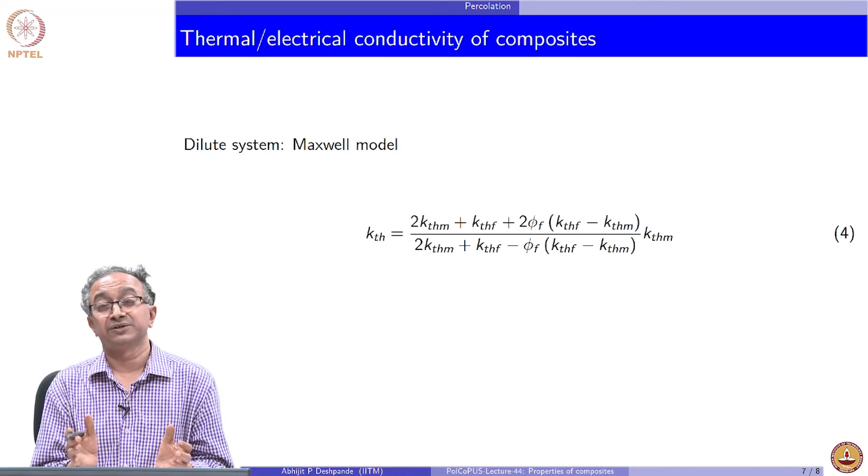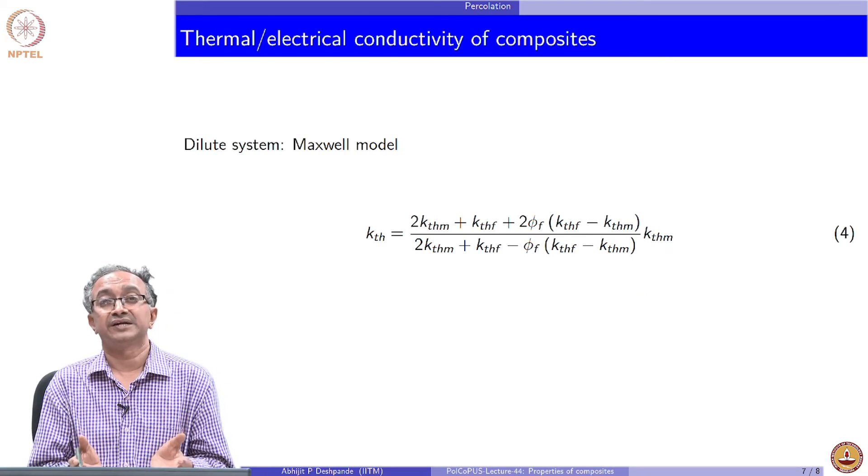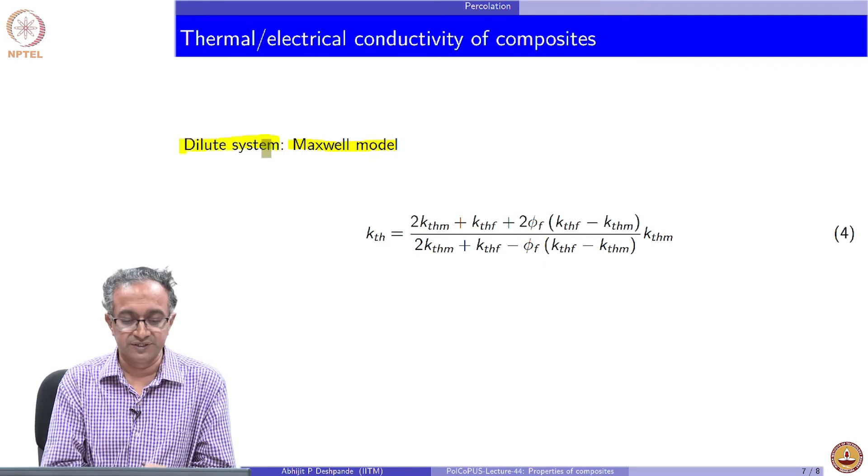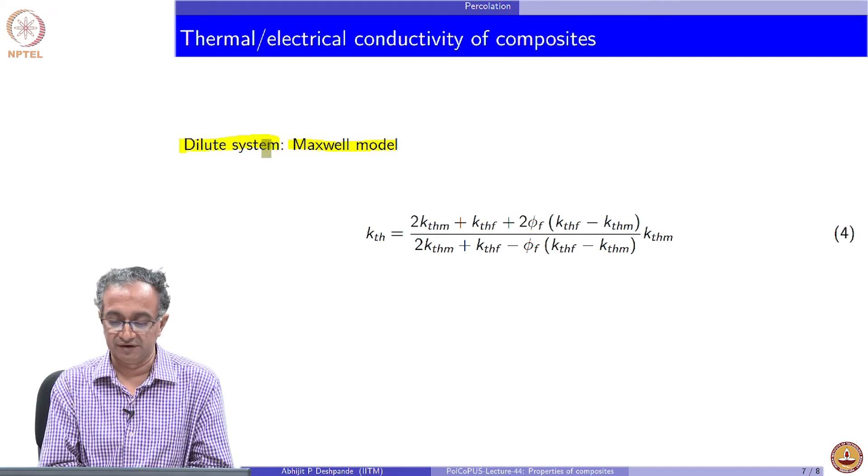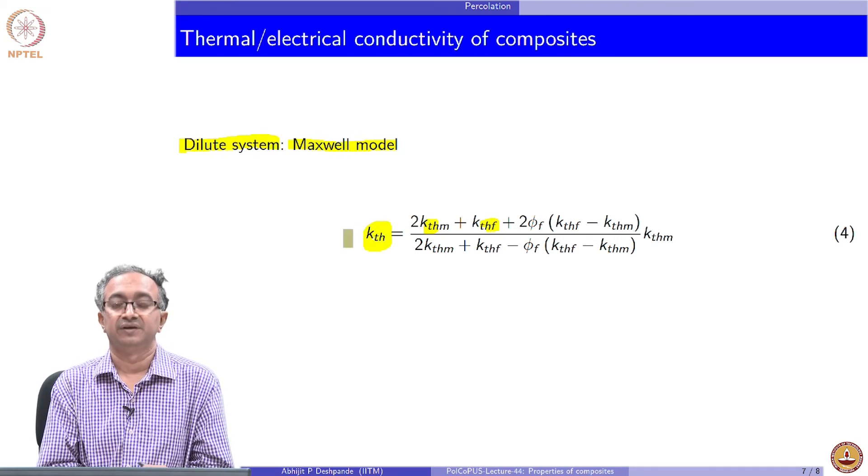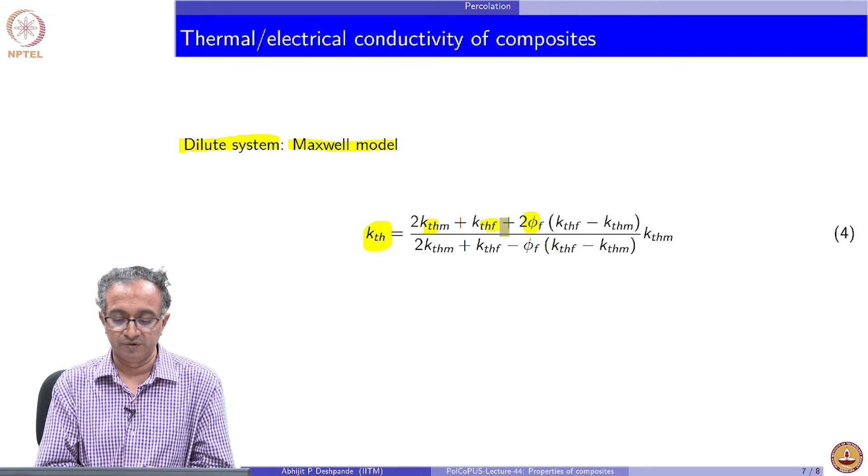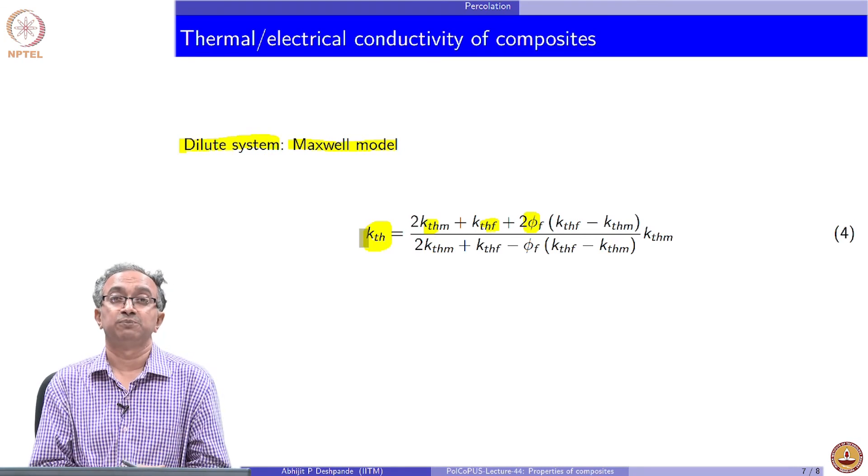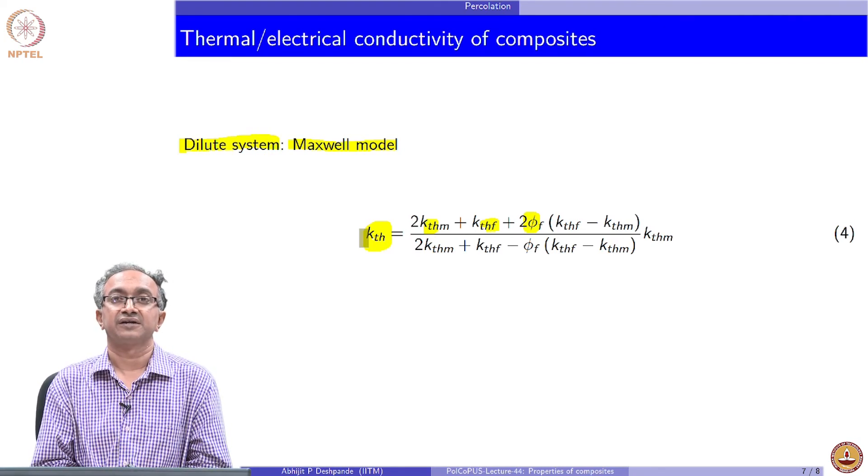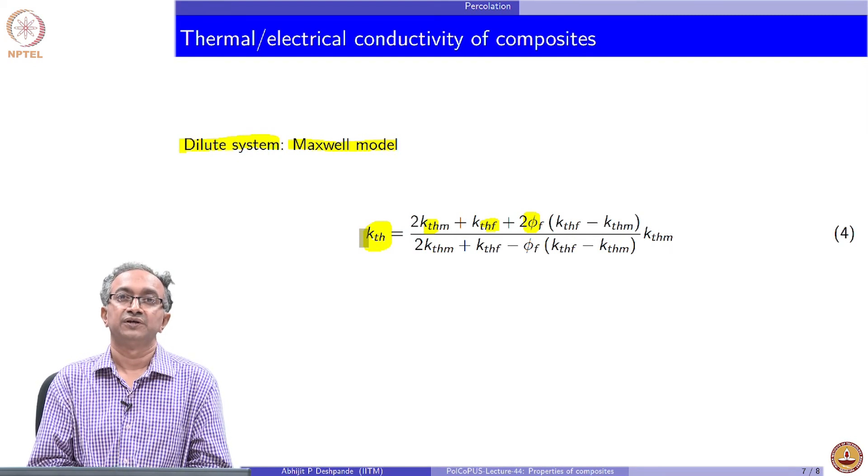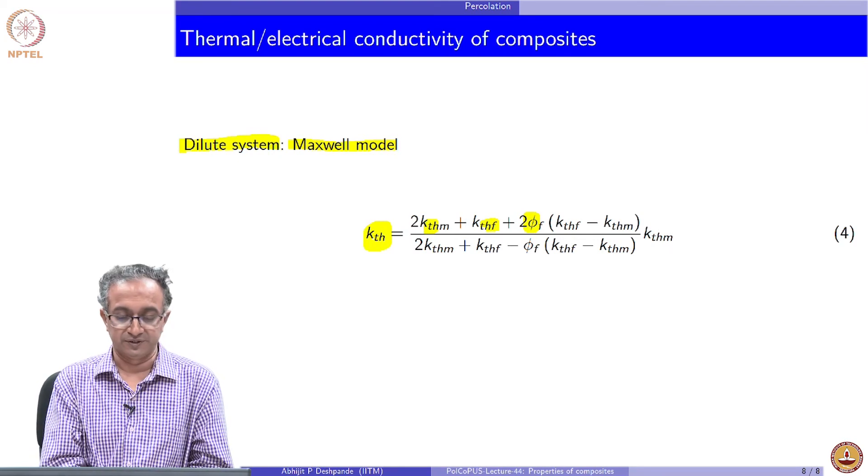The other aspect of composite material performance is related to electrical or thermal conductivity as we have discussed. Here again, the model which is used for a very dilute system is related to Maxwell development where the conductivity of fiber and matrix is related to the overall thermal conductivity of the composite. Depending on the fiber volume fraction, the filler volume fraction, this can vary. This is again the simplest possible model to estimate electrical or thermal conductivity in the material. There are more complex inter-empirical and semi-empirical relations which are also used by different practitioners of polymeric composite industry.